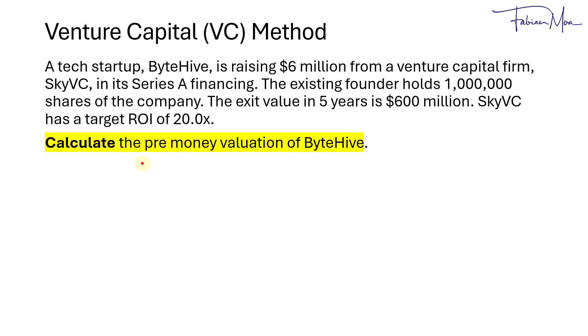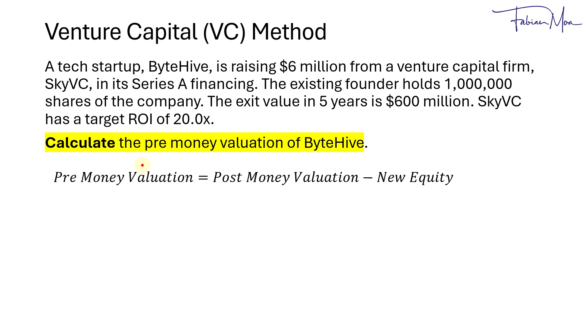Next, calculate the pre-money valuation of ByteHive. The pre-money valuation is equal to the post-money valuation minus the new equity investment. So that will be equal to $30 million minus $6 million, which is $24 million. In other words, before the $6 million investment, ByteHive would be worth $24 million.